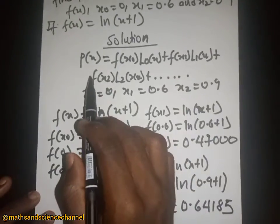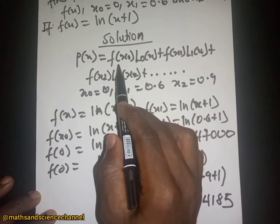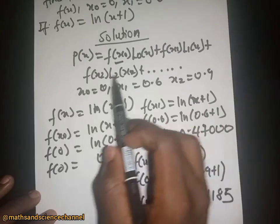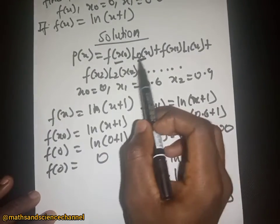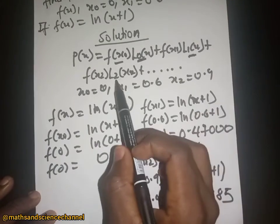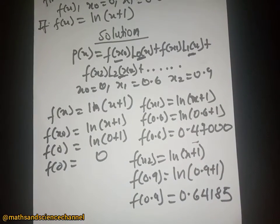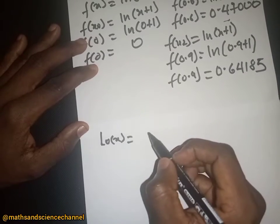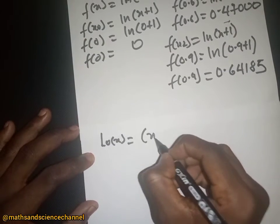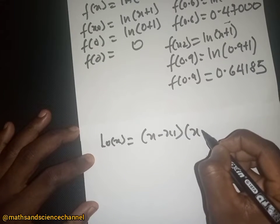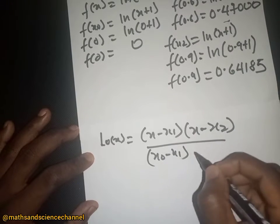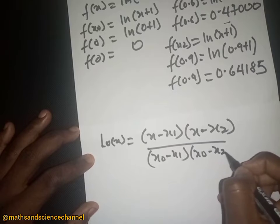So we now have f(s₀) = 0, f(s₁) = 0.47000, and f(s₂) = 0.64185. Next we need to find L₀(x), L₁(x), and L₂(x). For L₀(x), the formula is: L₀(x) = (x − s₁)(x − s₂) / [(s₀ − s₁)(s₀ − s₂)].